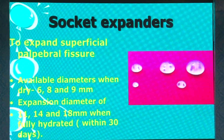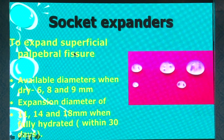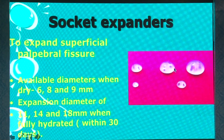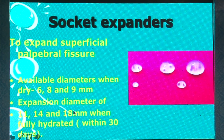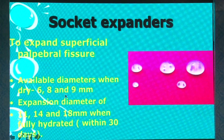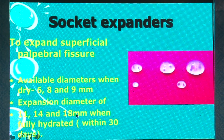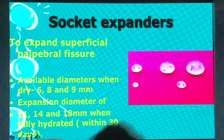For the expansion of the superficial palpebral fissure, which is done as the first stage before expanding the orbit, you need socket expanders. These come with a material which can expand upon coming in contact with water, and they are available in 6, 8, and 9 millimeter sizes, which enlarge to 11, 14, and 18 millimeters respectively within a month after hydration.